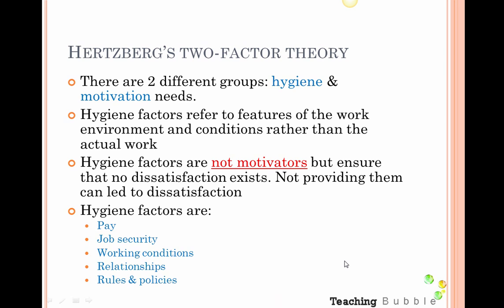Hi everyone, welcome back. Today we're going to look at our next motivation theory, and that is Herzberg's Two Factor Theory. Remember Maslow had five levels — Herzberg has two groups in his theory.